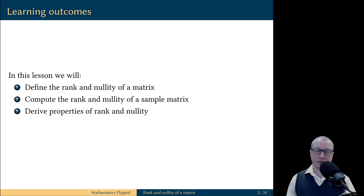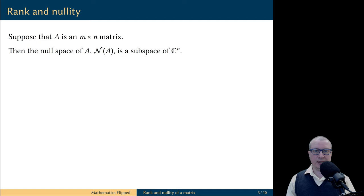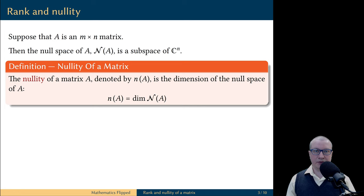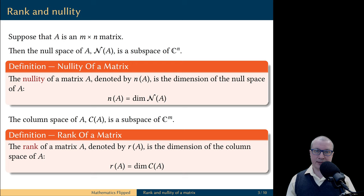Suppose we have an m by n matrix A. Then its null space is a subspace of the vector space of column vectors of size n, and we define the nullity of the matrix A as the dimension of its null space. The matrix A also has the column space,